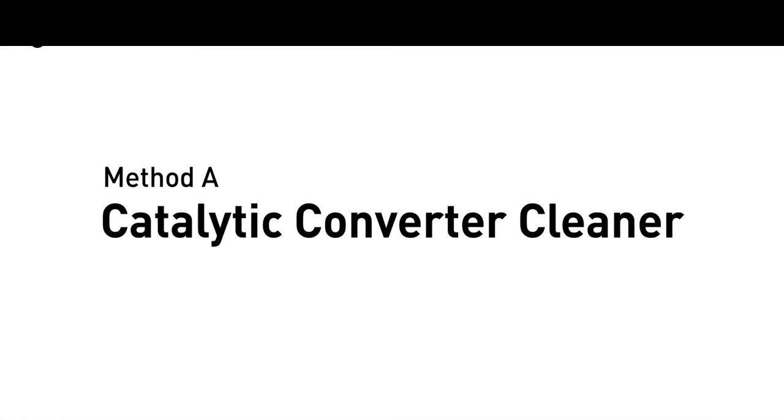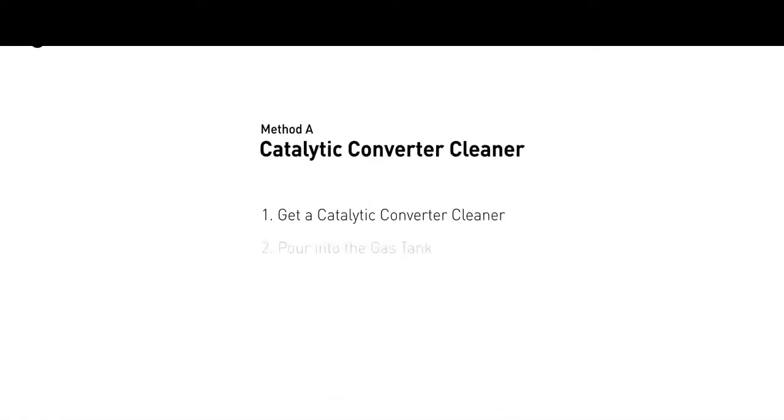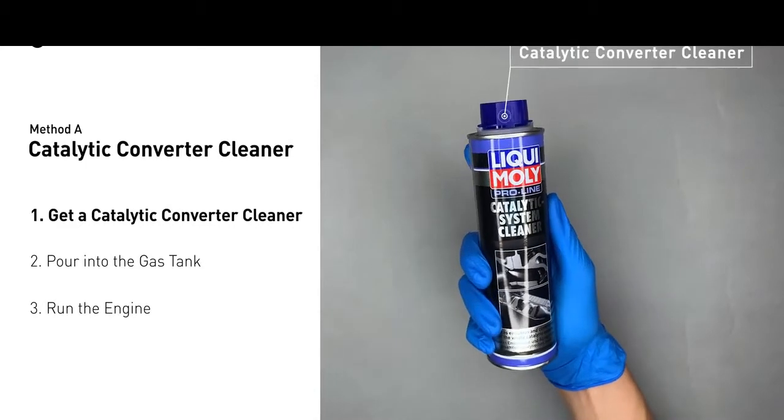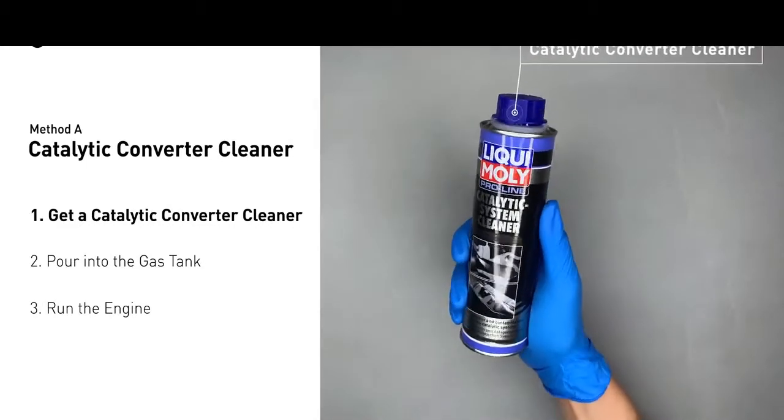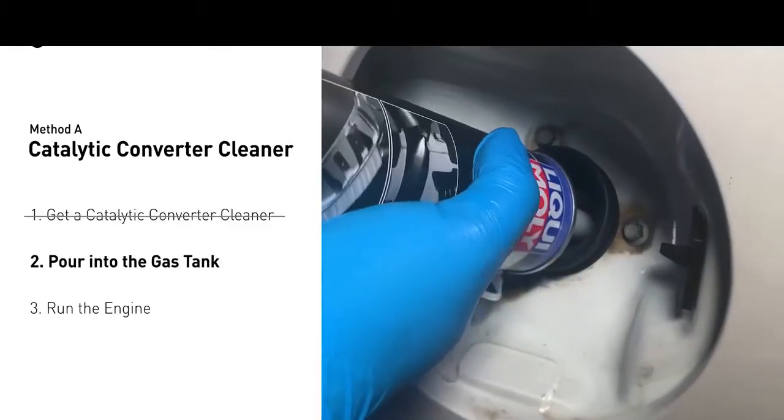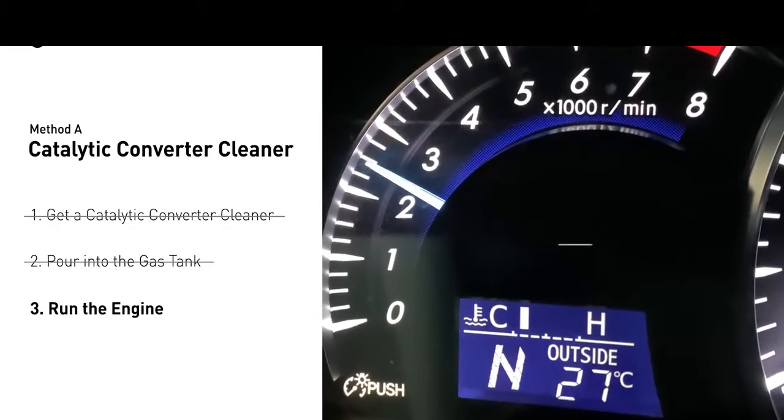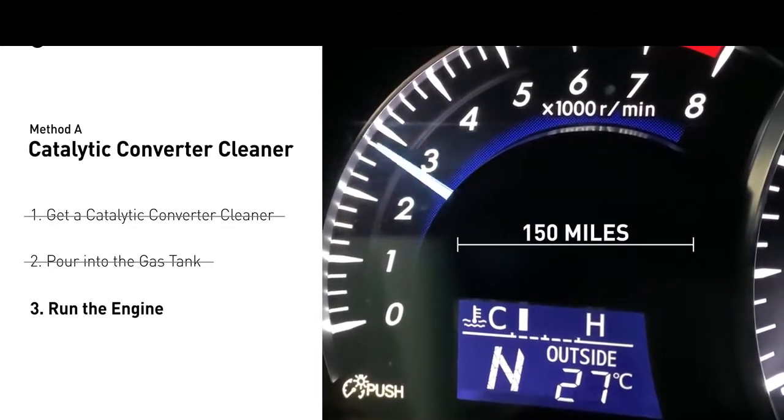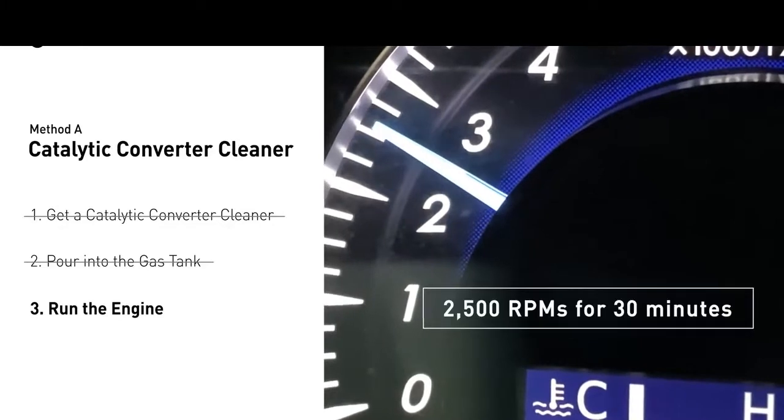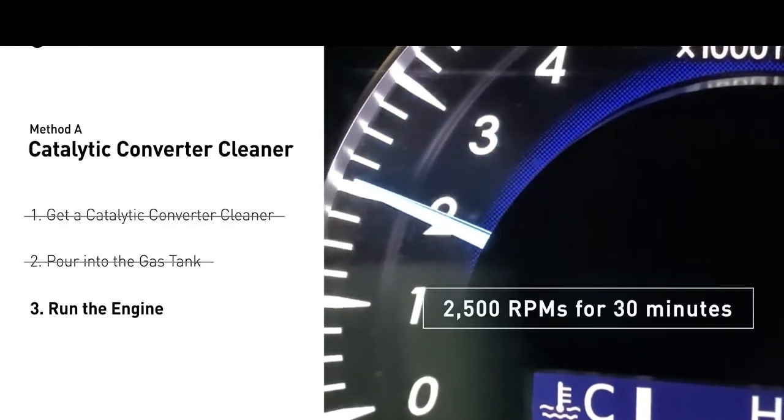Method A: use a catalytic converter cleaner. There are many different kinds of cleaner, normally all under $20. Simply pour the cleaner into the gas tank. Then you can drive your car for 150 miles or run the engine at about 2500 RPM for 30 minutes to run the cleaner through.